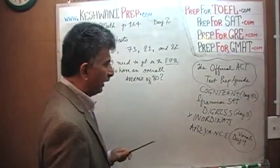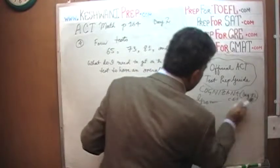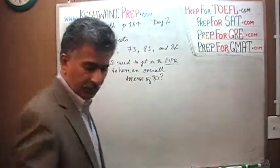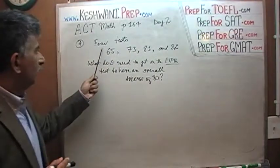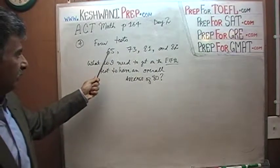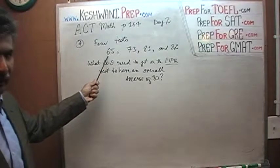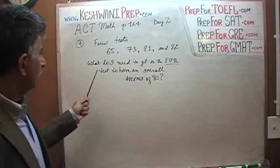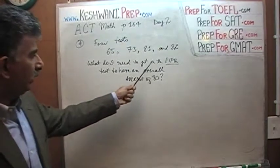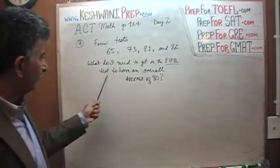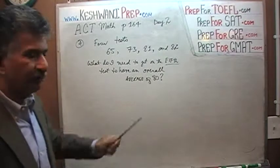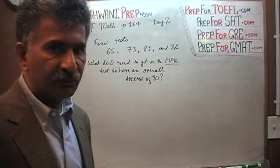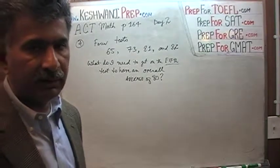Problem number four is what we are about to do. It says I have taken four tests, and my scores are as follows: 65 on the first exam, then 73, 81, and 82. The question is, what do I need to get on the fifth exam, on the fifth test, to have an overall average of 80? I want an overall average of 80. What do I need to get on the fifth one?